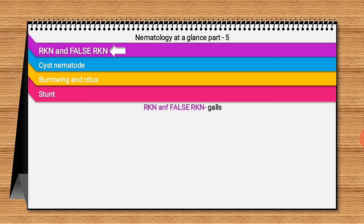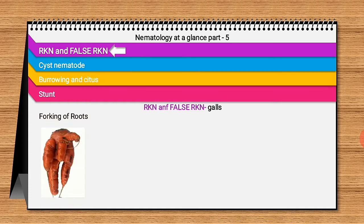The following symptoms are caused only by Meloidogyne species. In carrot, Meloidogyne causes forking of root. Forking is actually caused by Meloidogyne hapla, which feeds on the growing tip of the carrot root, or may also be due to heavy or compacted soil, resulting in branching of carrot roots.